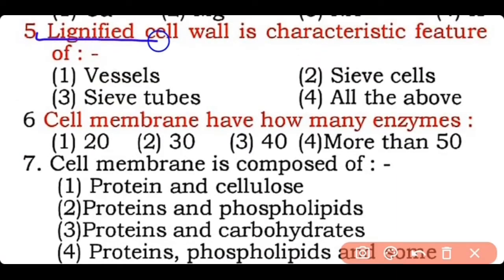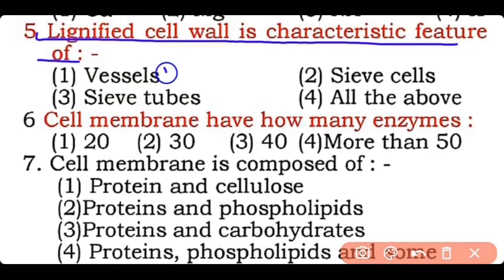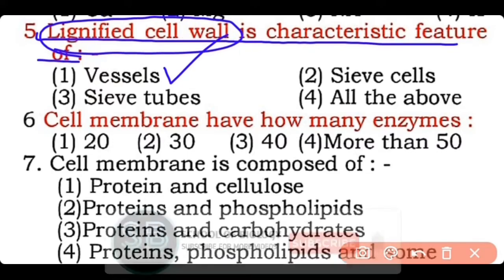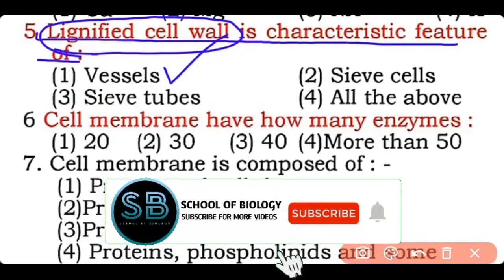Question 5: Lignified cell wall is a characteristic feature of — vessels, sieve cells, sieve tubes, or all of the above? Correct answer is option one — vessels have a lignified cell wall.